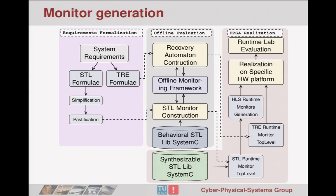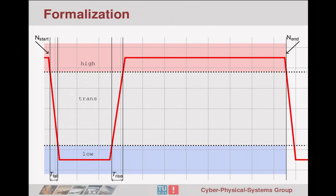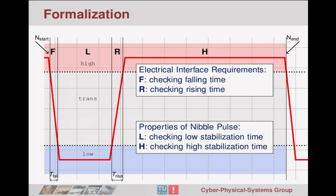What are the requirements? There are different groups. First is the electrical interface, where we essentially check whether the rise and fall times of each slope are satisfied. Then there are timing parameters for each of the pulse types — synchronization pulses or data pulses, also called nibble pulses. These timing parameters need to be checked. The pulse shape can be split into four regions: falling time, low time, rising time, and high time — each with its own specific requirements defined by the standard.